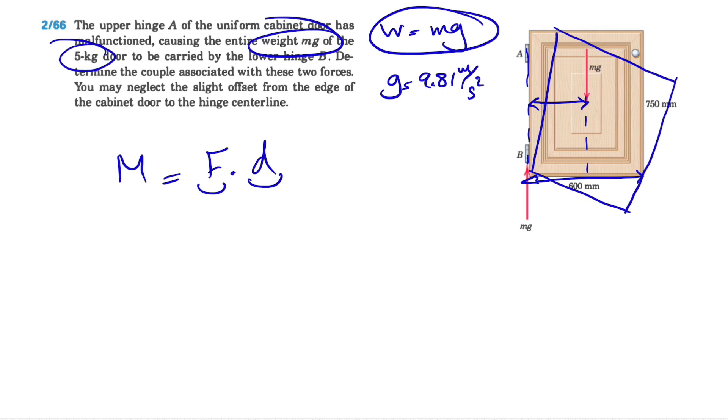The question is saying that we can neglect this slight offset from the edge of the cabinet. As I was saying, if that offset is too much, we're going to see something like this - the door is shifting a little bit to the right.